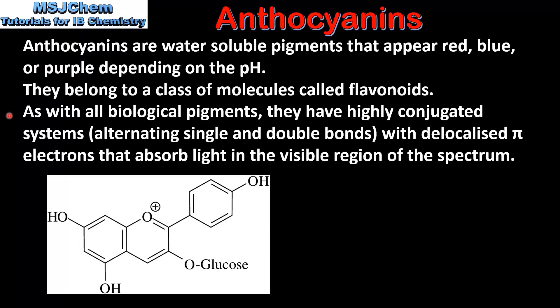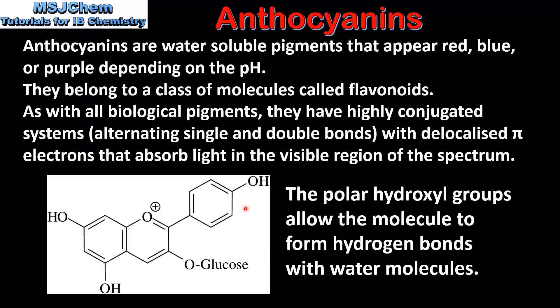As with all biological pigments, they have highly conjugated systems with delocalized pi electrons that absorb light in the visible region of the spectrum. Here we have an example of an anthocyanin molecule. The polar hydroxyl groups allow the molecule to form hydrogen bonds with water molecules, which explains their solubility in water.